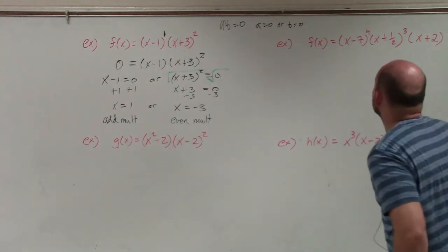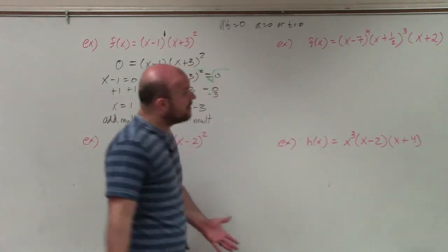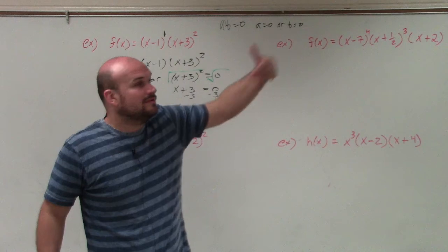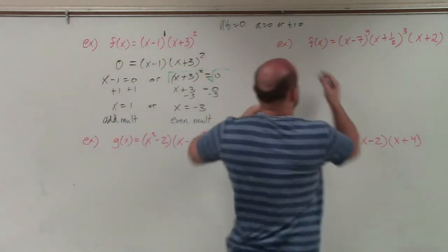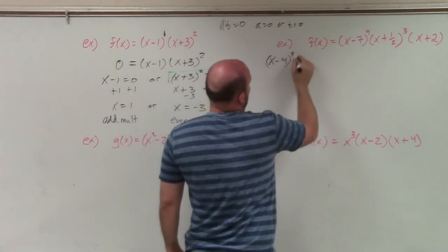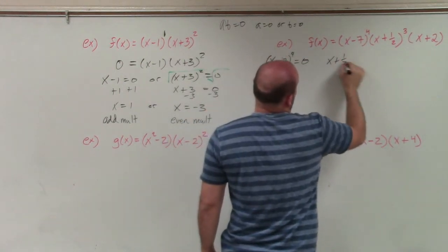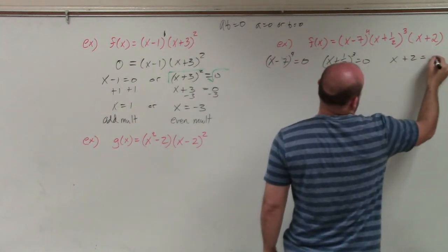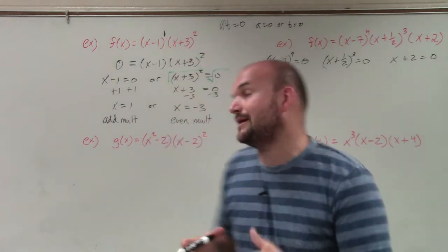The next one: f(x) equals (x minus 7) to the fourth times (x plus one-half) cubed times (x plus 2). We set each factor equal to zero: x minus 7 equals zero, (x plus one-half) cubed equals zero, and x plus 2 equals zero.